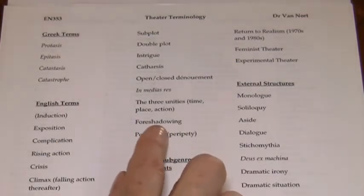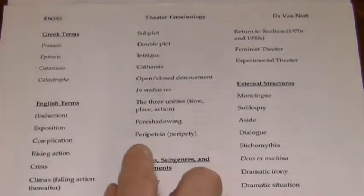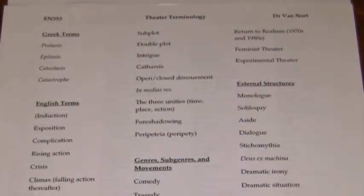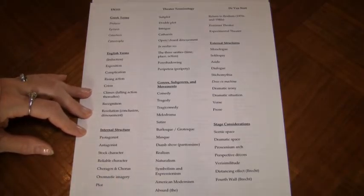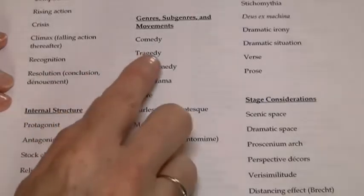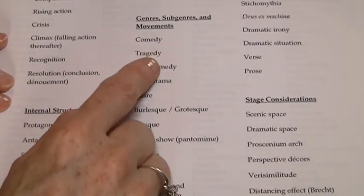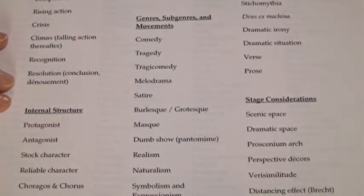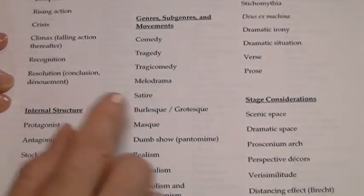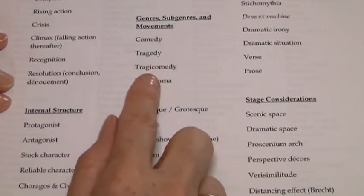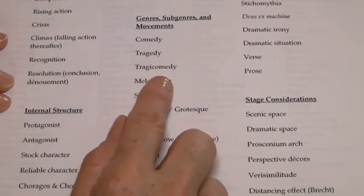Sometimes you'll have elements of foreshadowing, and here's your peripety or peripeteia. Some of the other things to look at, because we'll be talking about the parts of plays: for example, you may have tragedy within a play but a comic subplot, or maybe the play is largely comic with some tragedy within that subplot.